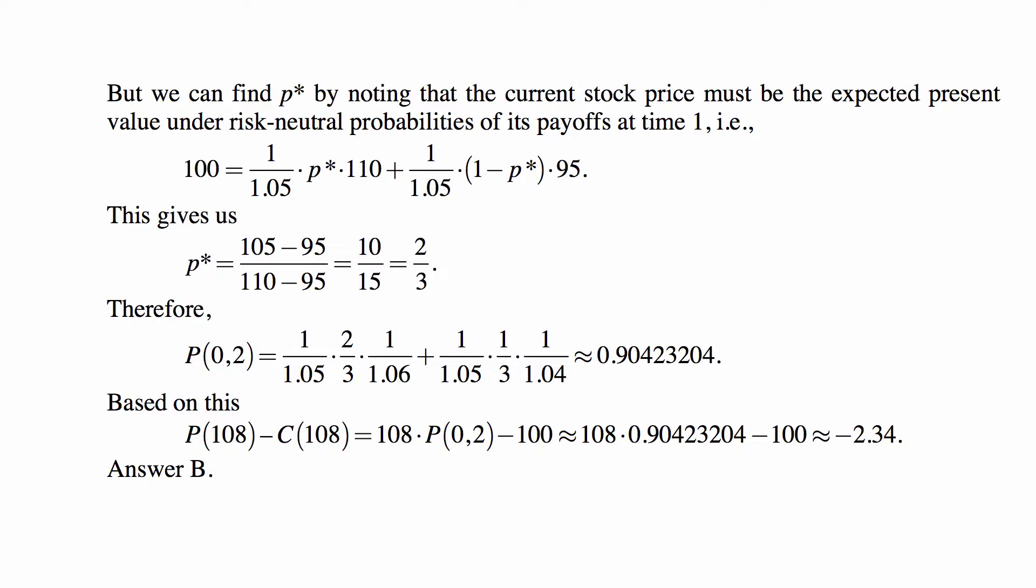And this is an equation in which the only unknown is p*. We solve it and get p* to be two thirds. And then we plug that in for the formula for the price of the zero coupon bond, and we get the price of the zero coupon bond.